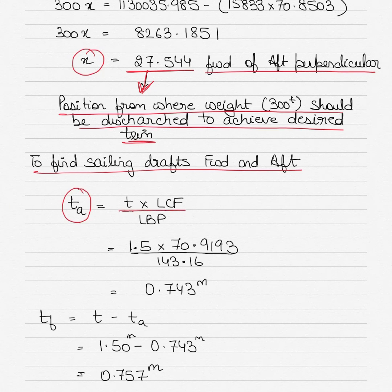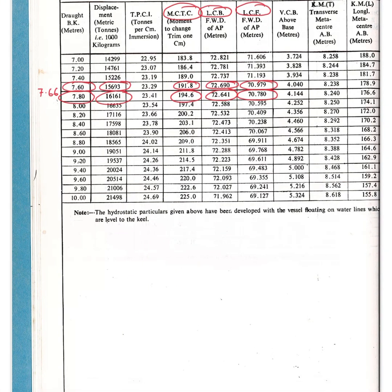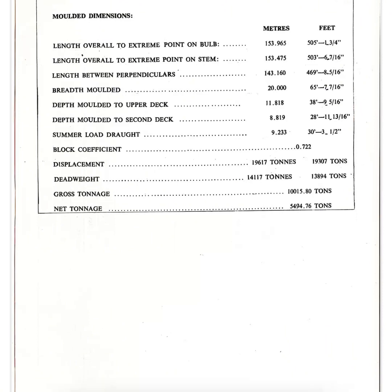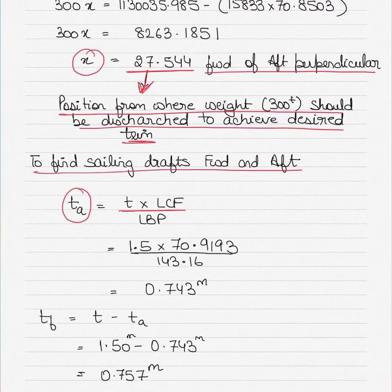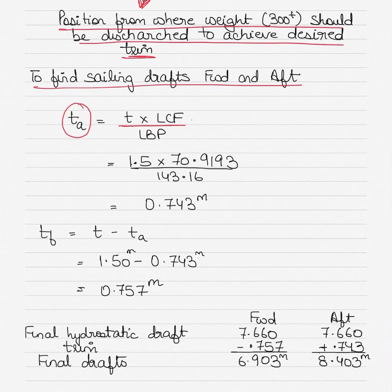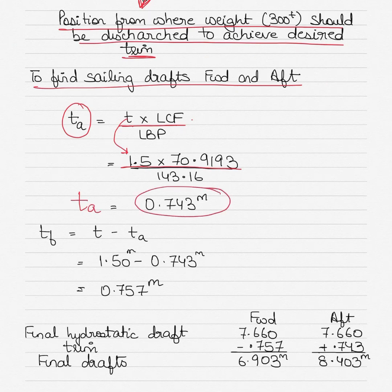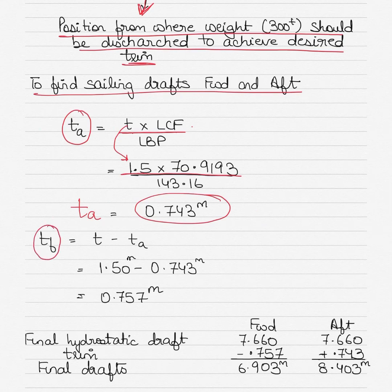To find the sailing drafts, use the formula: change in trim aft equals total trim multiplied by LCF divided by LBP, where LBP is length between perpendiculars. From the tables, LBP is 143.16 meters. Using the LCF value interpolated earlier, the total desired trim of 1.5 meters, the change in trim aft is 0.743 meters. Subtracting from the total trim, the change in trim forward is 0.757 meters.